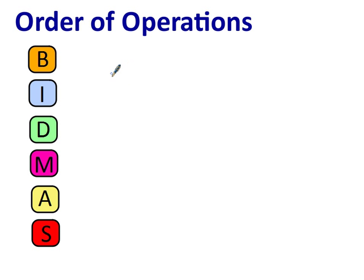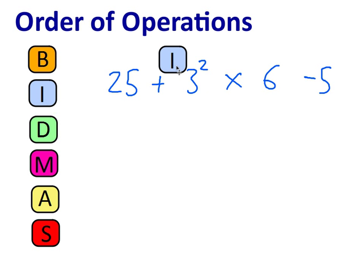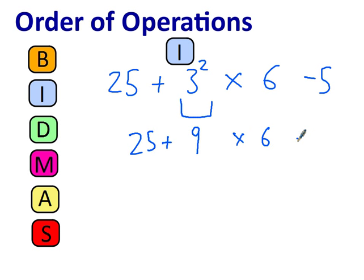We're on to our third example already. 25 plus 3 times 6 take away 5. But let's square the 3 this time. So we have an index number now. We'll need to work that out first. Because it is more important than the addition, the times, or the subtraction. So 3 squared, that is 9. 25 plus 9 times 6 take away 5.